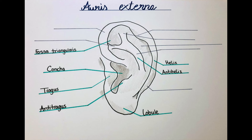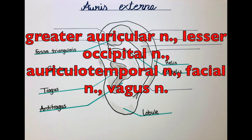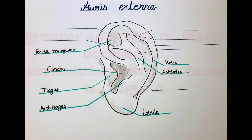The innervation is also by different branches of various plexuses. There are two branches of the cervical plexus: the greater auricular nerve and the lesser occipital nerve. Then the auriculotemporal nerve, a branch of the mandibular nerve, and the facial nerve and the vagus nerve — so the seventh and the tenth cranial nerve.